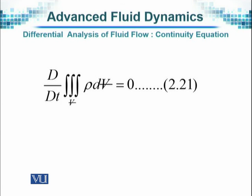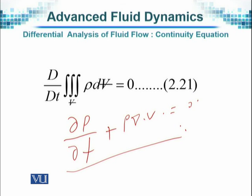Normally it is also written as D by dt, the capital D by dt into the integral of rho dV equal to 0. You will remember that this involves the derivative with respect to time also if it is not a steady motion and then plus the convective terms that occur here rho into dV equal to 0.